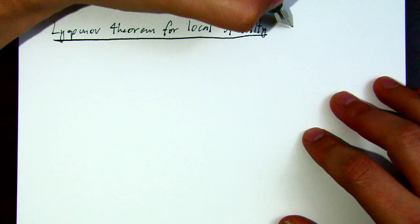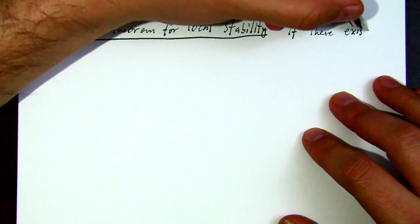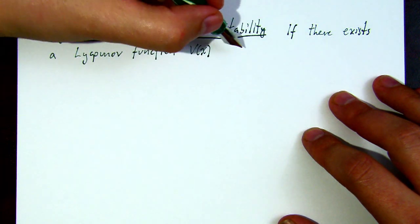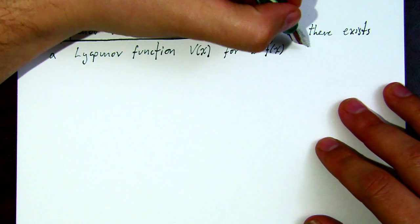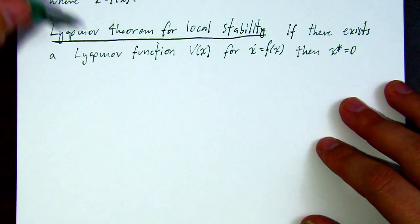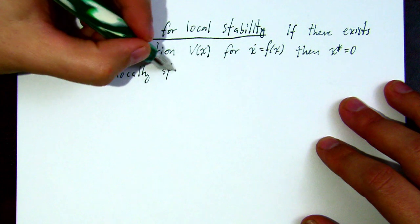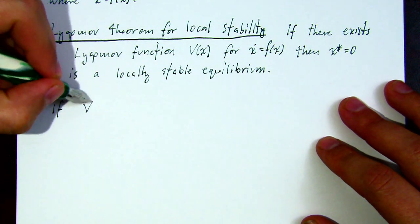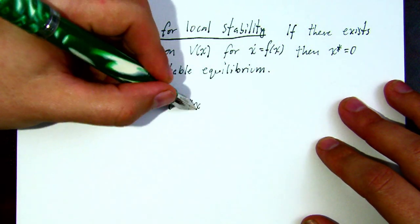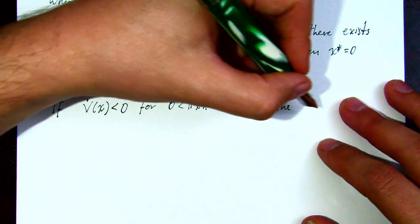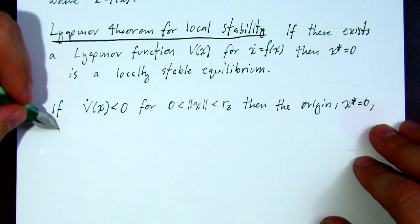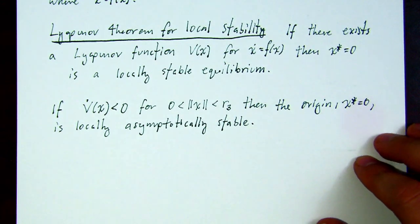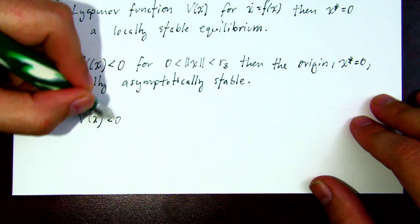Now let's talk about the Lyapunov theorem for local stability. If we have a Lyapunov function V(x) for the system x-dot equals f(x), then you can say the equilibrium is locally stable. The trick is to find the Lyapunov function — that's all the work in this approach. If V-dot is negative definite (not just negative semi-definite) around some neighborhood of the origin, then x-dot equals f(x) is locally asymptotically stable.